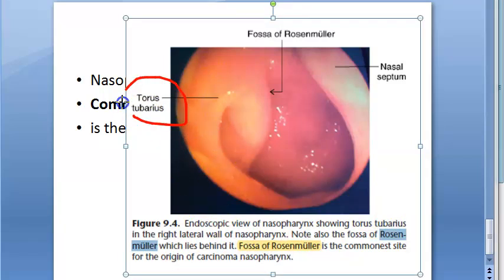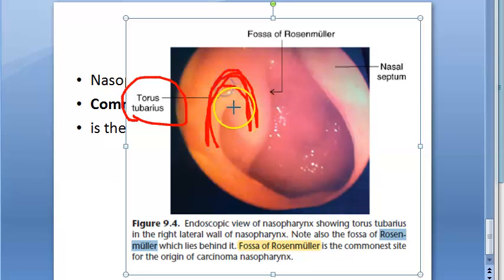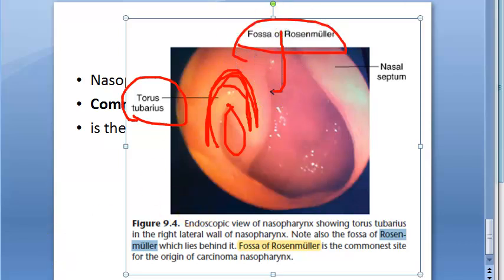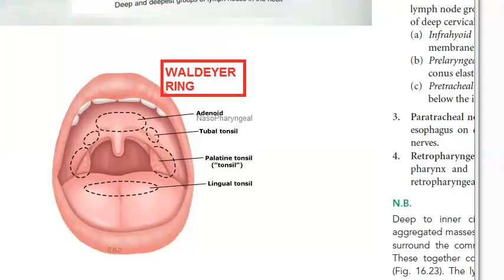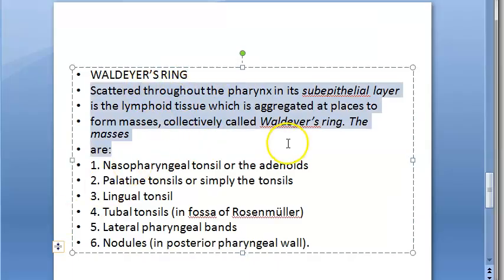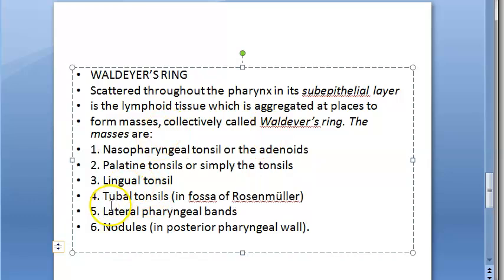In the endoscopic view, you can see the torus tubarius, which is the elevation, then the eustachian tube opening, and then you have the fossa of Rosenmüller. This is the commonest site for nasopharyngeal cancer, carcinoma. The textbook also says that it is a part of Waldeyer's ring — they are including the tubal tonsil, which is located in the fossa of Rosenmüller.